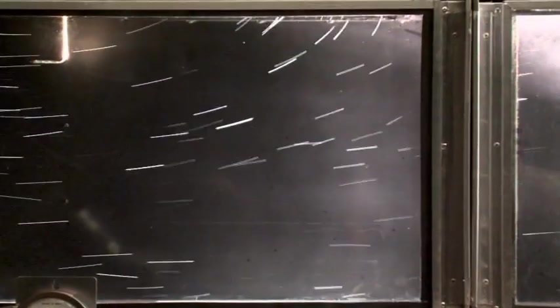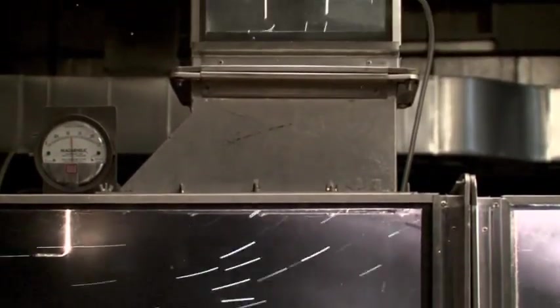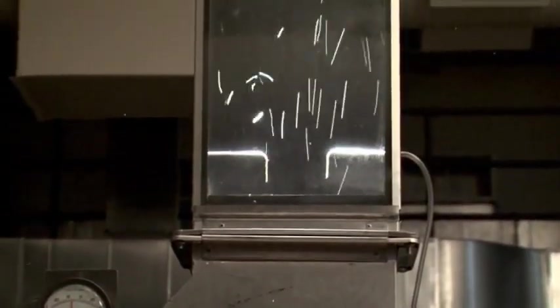This shows the airflow path up a branch duct that has a simple 45-degree takeoff fitting. Because the airstream is able to bend along the 45-degree angle into the straight branch duct, turbulence is not significant.